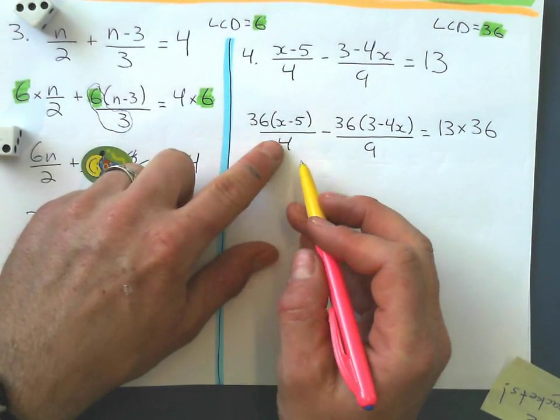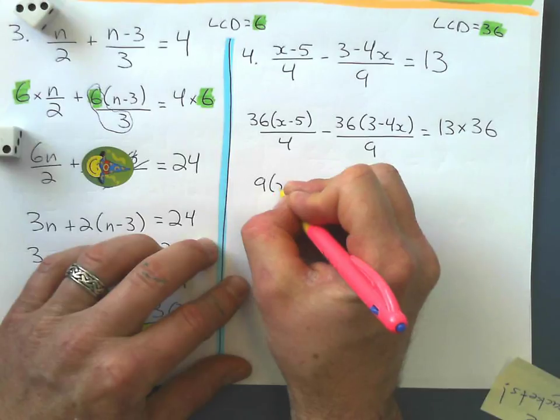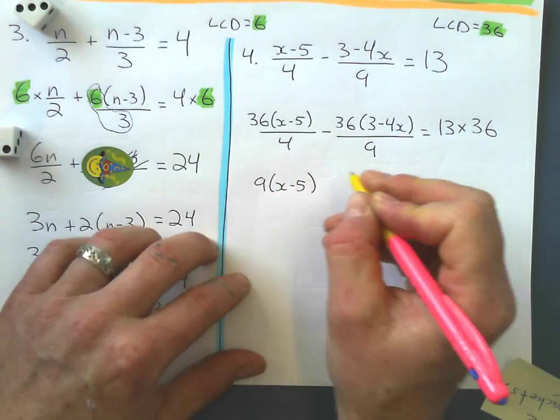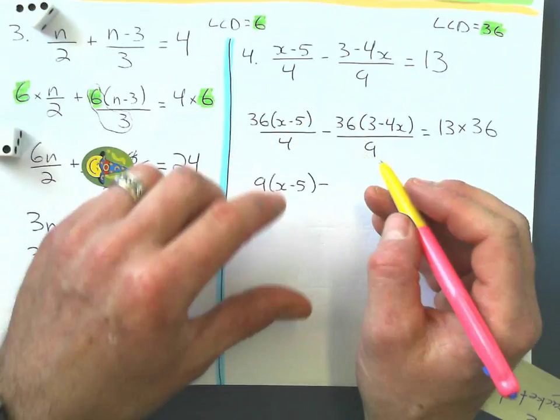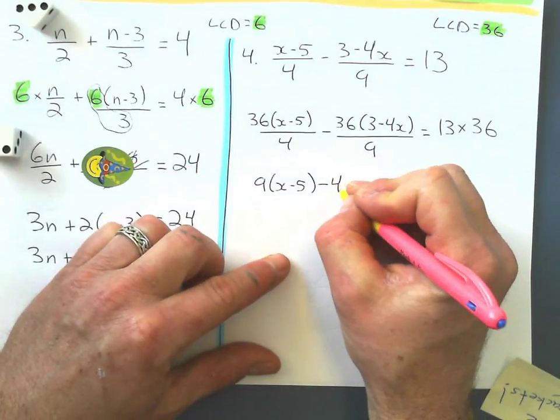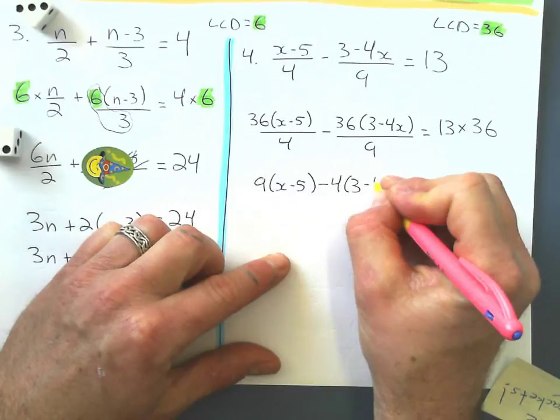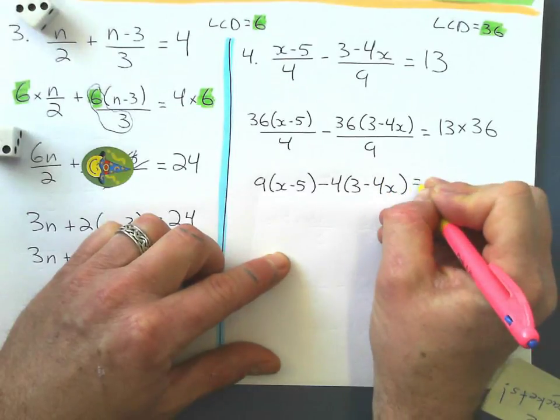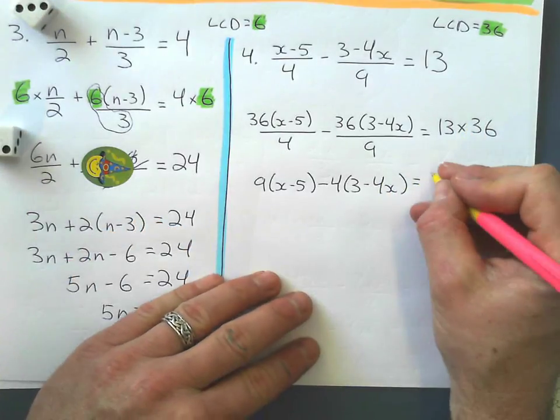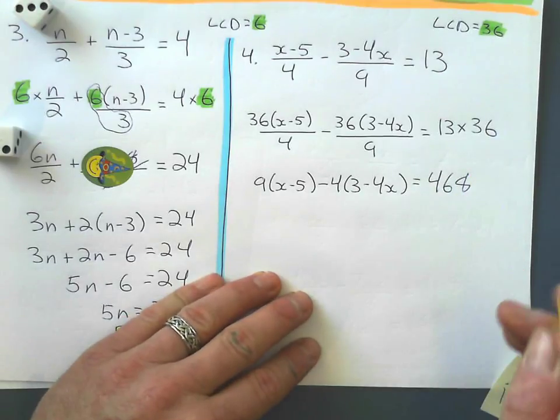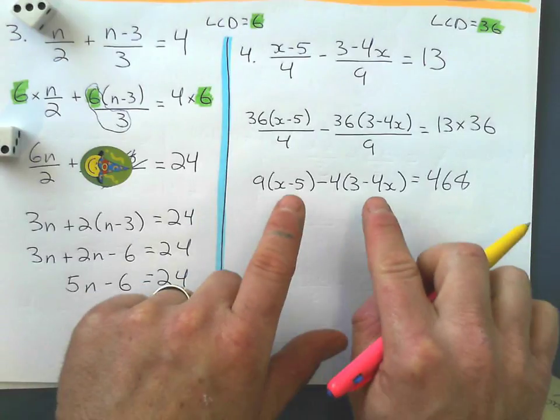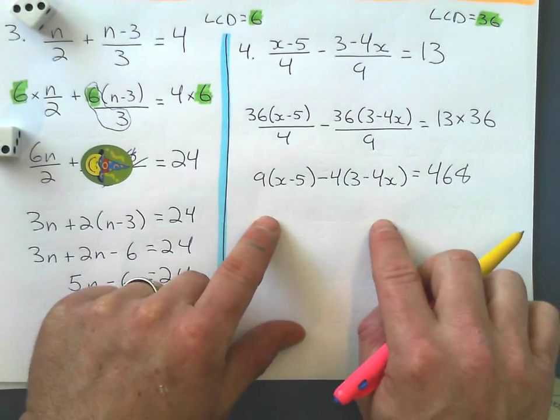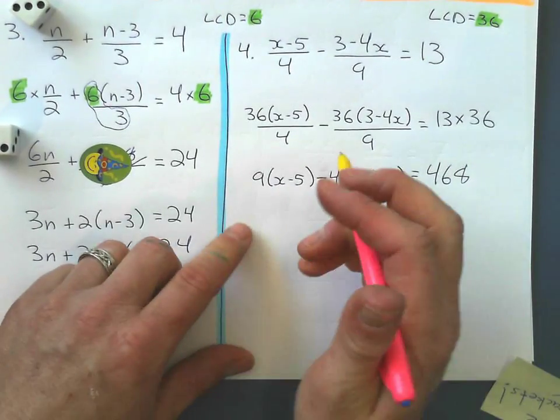Okay, and what do I get here? 36 divided by 4 is 9. 9 brackets x minus 5 minus 36 divided by 9 is 4 brackets 3 minus 4x. And 13 times 36 gives me 468. I didn't do that in my head. I had it worked out already. Now, expand, collect like terms, solve for x. We're ready to go.